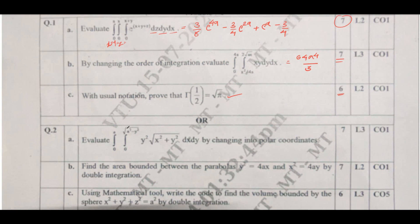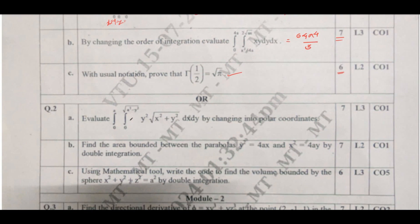Moving to the optional question: evaluate the integral from 0 to a, and from 0 to √(a²−y²), of y²√(x²+y²) dx dy by changing into polar coordinates. You need to consider x = r cos θ and y = r sin θ. By applying these changes and simplifying, you get the solution a⁵·(π/20). If you got this solution, you can score 7 out of 7.